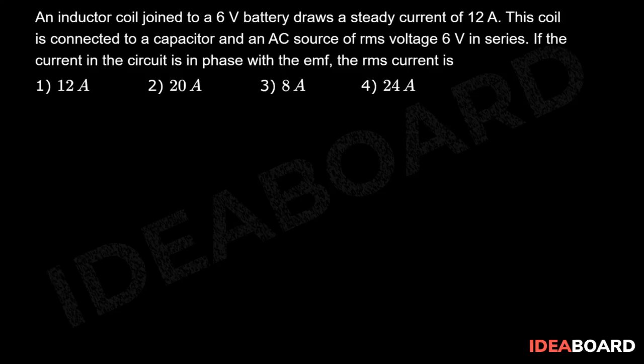Now in the given question they are saying that the battery draws a steady state current. That means I is equal to V upon R. This R is the resistance of the inductor coil. So from there we can calculate R is equal to V upon I.